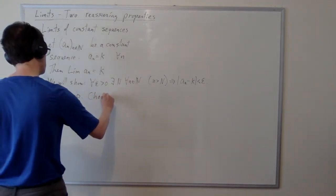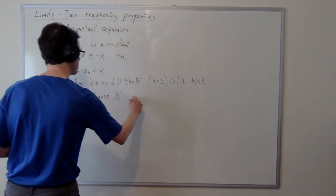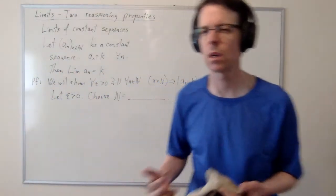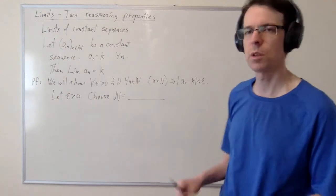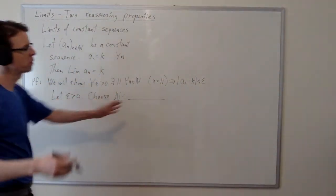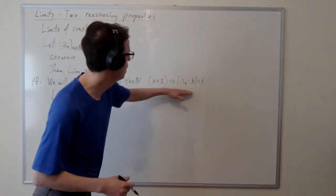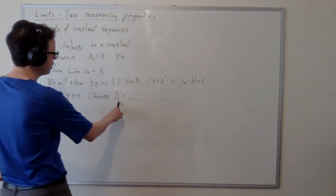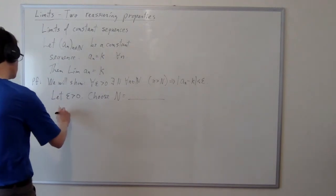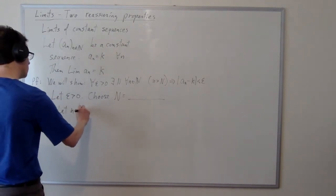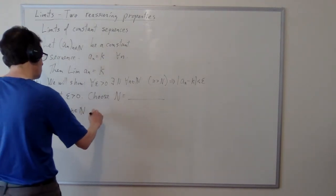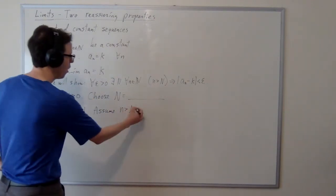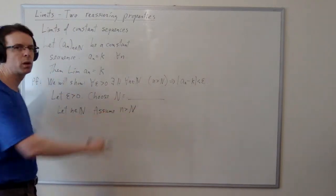And then as usual in these proofs, we're going to choose N to be something and we're going to delay the choice of N because we don't know what is the appropriate choice of N yet. And it usually depends upon epsilon. It usually depends on some complicated computation that we have to do with this equation here. But no matter how we choose N, the next step in the proof is to let n be a natural number and to continue by assuming that n exceeds cap N.